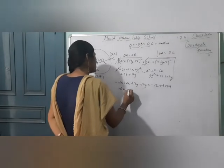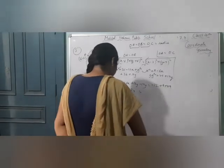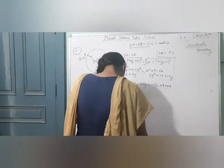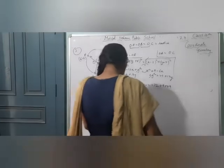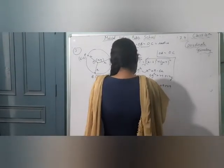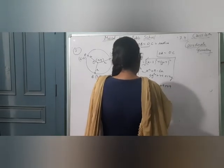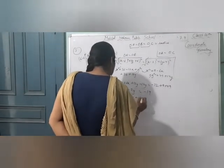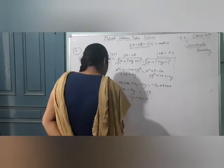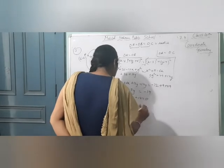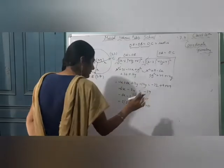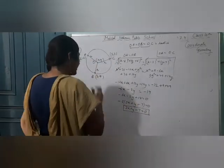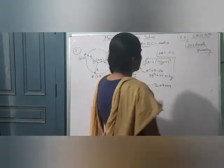Simplifying: -6x - 2y + 14 = 0. Taking -2 common: 3x + y - 7 = 0. This is the first equation.